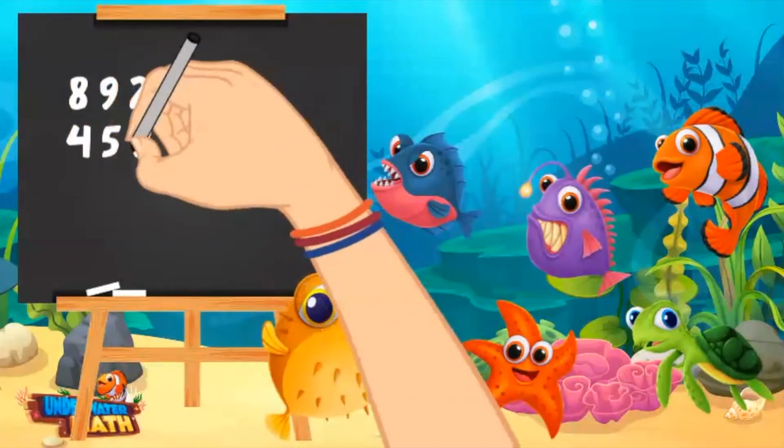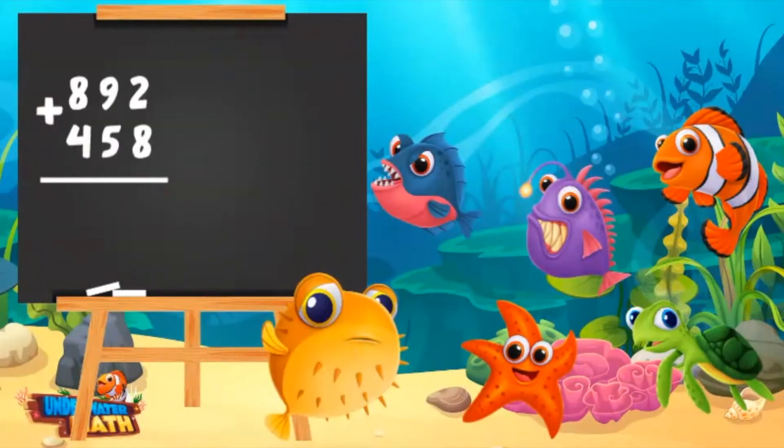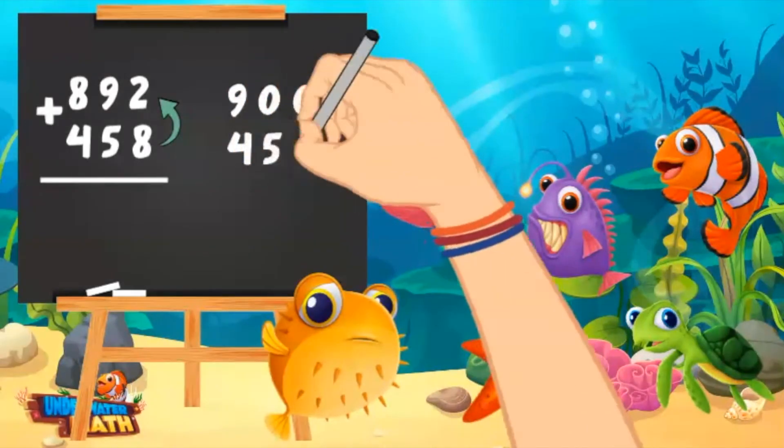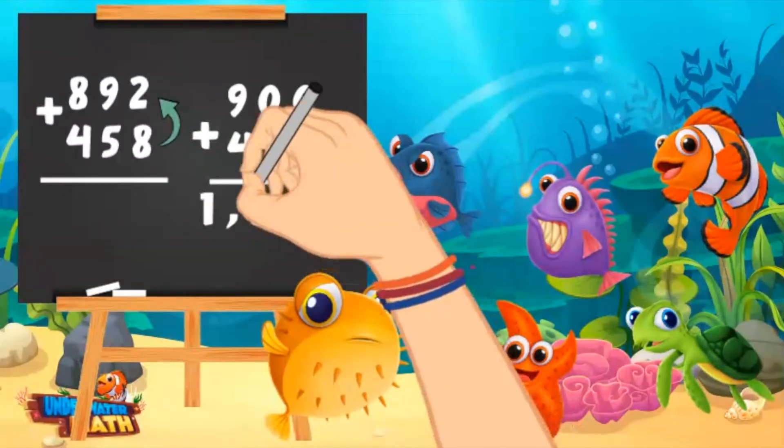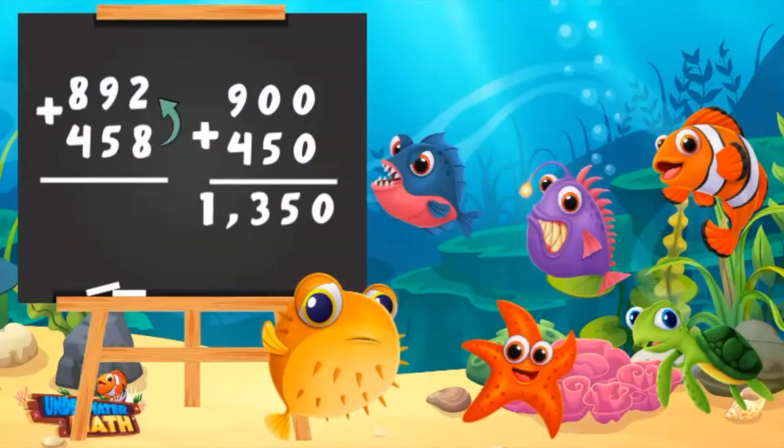Who wants the next problem? I will take it! Great! Tell me how you would solve 892 plus 458. Watch this magic! I can move numbers around to make them easier to work with. 892 is only 8 away from 900. If I take 8 from 458 and add it to 892, I get the new problem: 900 plus 450. Now I add the numbers together easily. 900 plus 450 equals 1,350.